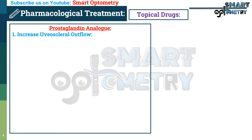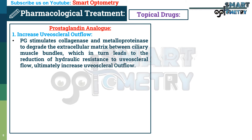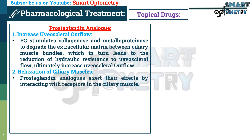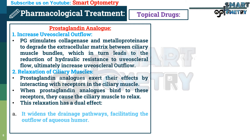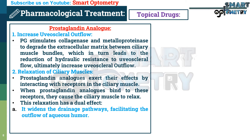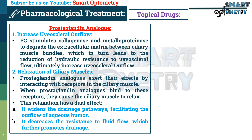Prostaglandin analogs work through two mechanisms. First, they increase uveoscleral outflow by stimulating collagenases and metalloproteinases to degrade the intracellular matrix between ciliary muscle bundles, reducing hydraulic resistance of uveoscleral flow and ultimately increasing uveoscleral outflow. Second, prostaglandin analogs cause relaxation of ciliary muscles by interacting with receptors in the ciliary muscles. This relaxation widens the drainage pathway, facilitating the outflow of aqueous humor, and decreases resistance to fluid flow, further promoting drainage.